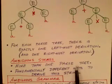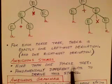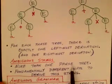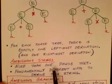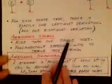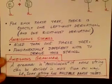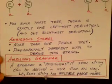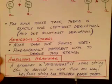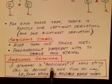More than one parse tree — or to say it another way, any string that has more than one leftmost derivation is ambiguous. An ambiguous grammar is one in which at least one string can be derived in more than one way. In other words, an ambiguous grammar is a grammar where some string has multiple parse trees. If this grammar can generate ambiguous strings, then the grammar itself is ambiguous.